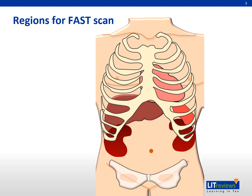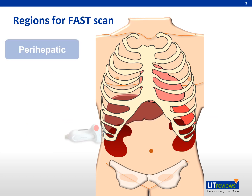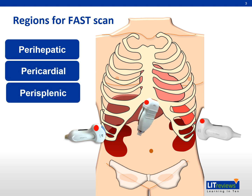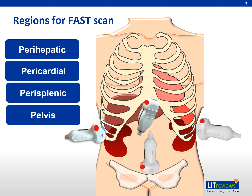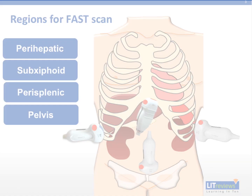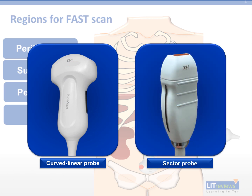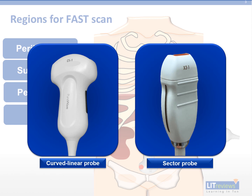The regions covered in a FAST scan are the perihepatic, pericardial, perisplenic, and pelvis. The curved linear ultrasound probe provides good penetration and resolution. The sector probe is often used to scan the pericardial region.